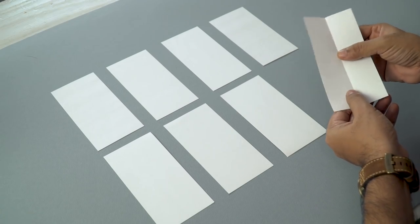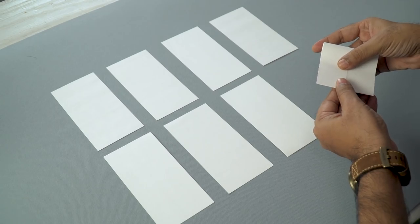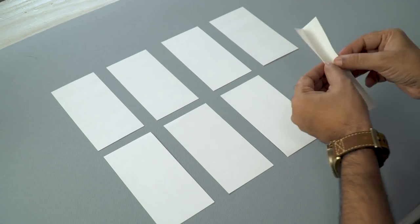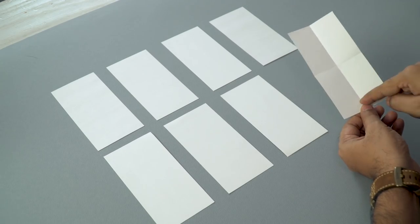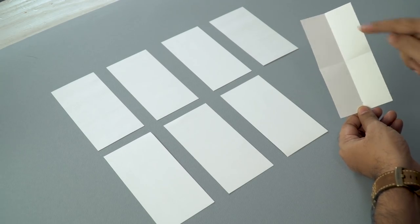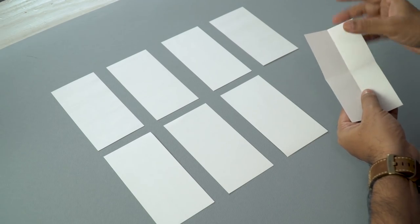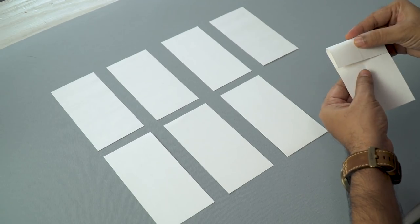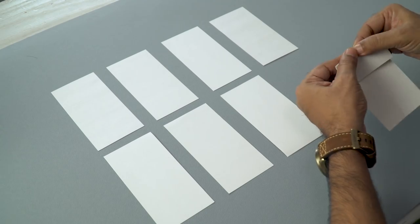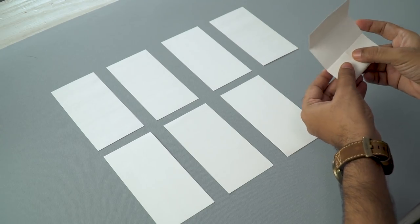Now I will divide this in half again, but this time horizontally. So you can see we divided this in half. First vertically, now horizontally. So we have this cross or plus sign. Now we'll take the top half and divide it in half again.